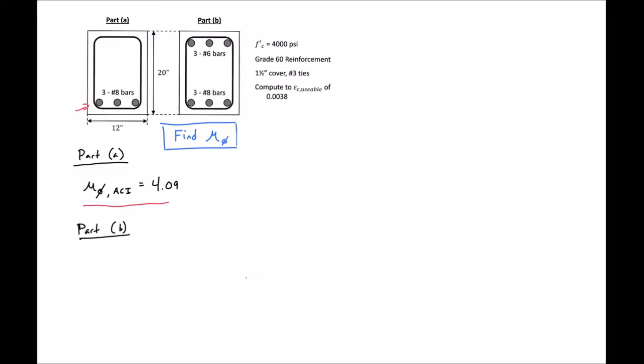So to start, our part B will start by using equilibrium. Tension equals compression. Our tension in this case is our area of steel in tension times Fy. We're assuming our tension steel yields plus A prime S Fy plus 0.85 F prime C B beta 1 C.